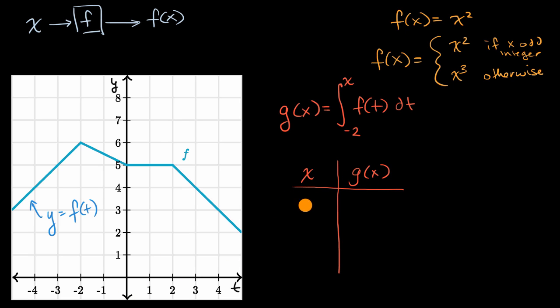So if x is one, what is g of x going to be equal to? All right, so g of one is going to be equal to the definite integral going from negative two. Now, x is going to be equal to one in this situation. That's what we're inputting into the function. So one is our upper bound of f of t dt. And what is that equal to? Well, that's going to be the area under the curve and above the t-axis between t equals negative two and t is equal to one. So it's gonna be this area here.